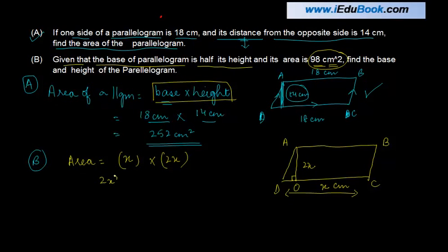So X into 2x is equal to 2x square is equal to 98 cm square. Or in other words, X square is equal to 98 divided by 2 or 49 cm square.